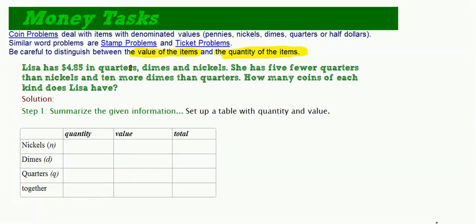So, let's look at this problem. Here's an example. Lisa has $4.85 in quarters, dimes and nickels. She has 5 fewer quarters than nickels and 10 more dimes than quarters. How many coins of each kind does Lisa have? We want to know how many coins of each kind.